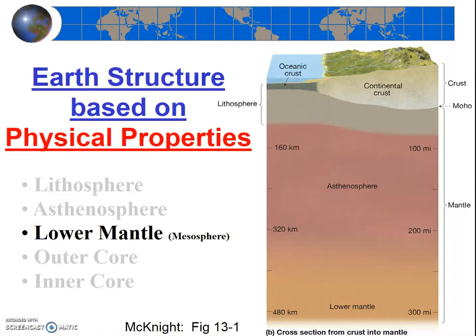Just as you can compress a gas to make a liquid, you can also compress a liquid to make a solid. So the rocks in the lower mantle are certainly hot enough to melt at surface conditions, but the intense pressure keeps them solid.